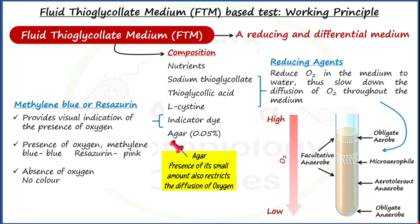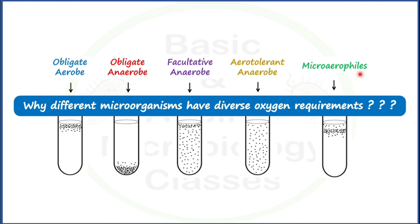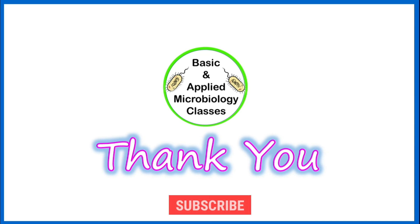So now we are clear about obligate aerobs, obligate anaerobs, facultative anaerobs, aerotolerant anaerobs, and microaerophiles — all the types of microorganisms based on oxygen requirements — including their examples and the FTM-based test used in microbiology laboratories. The question of why different microorganisms have diverse oxygen requirements will be covered in the next video. Thank you and keep watching.